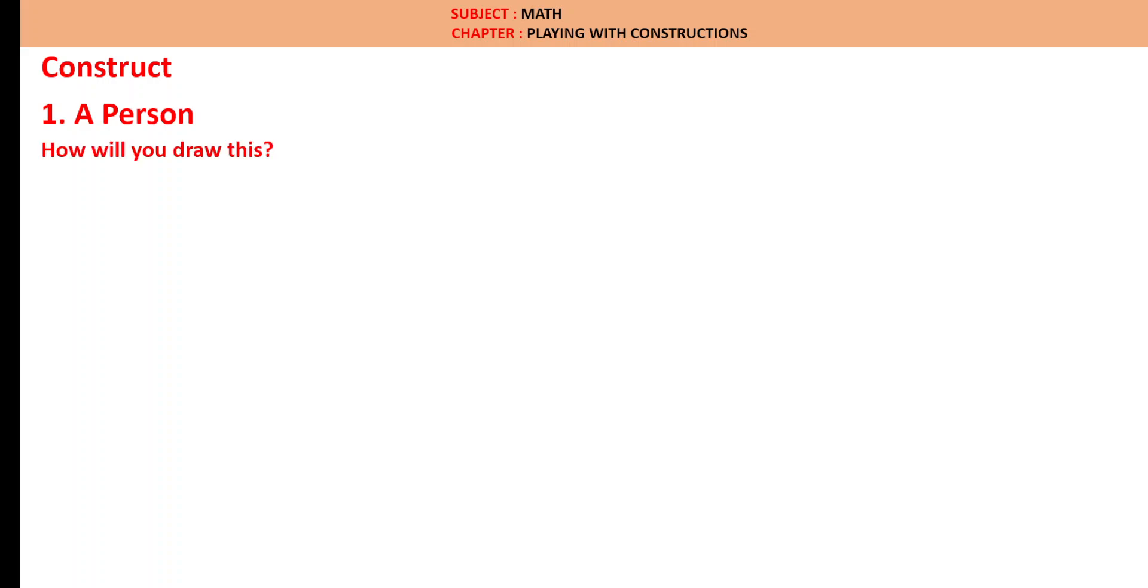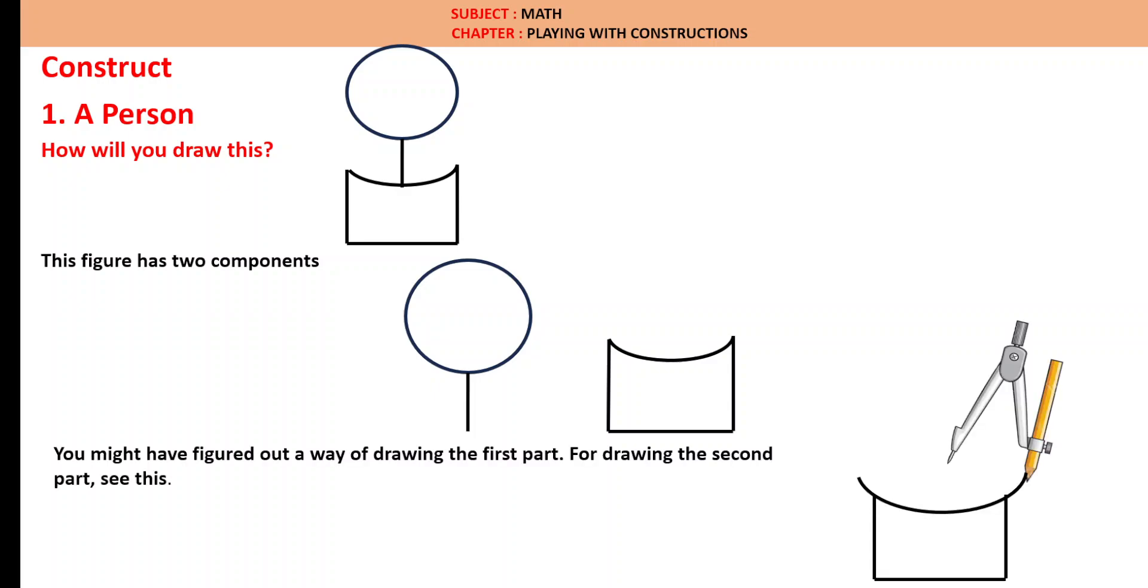Construct a person. How will you draw this? This looks like a person. If we observe here, it consists of one circle and below is three straight lines which is like a rectangle and one curve shape. So, the figure has two components: one circle with a line and a rectangle, kind of curvy rectangle on one side. You might have figured out the way of drawing the first part. For drawing the second part, we have to take this compass and draw an arc.